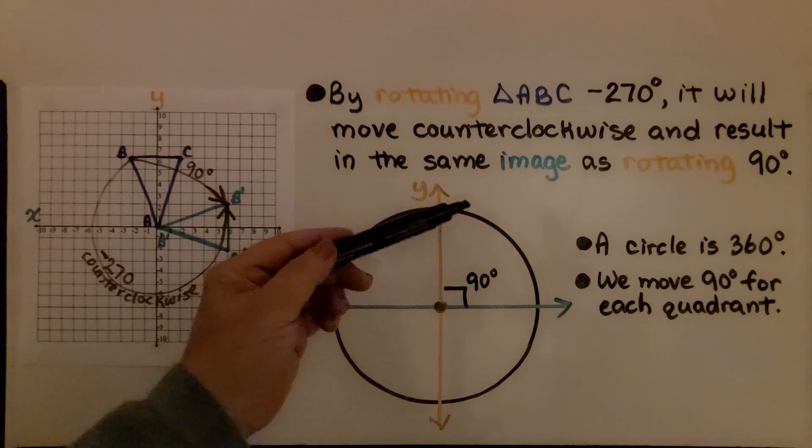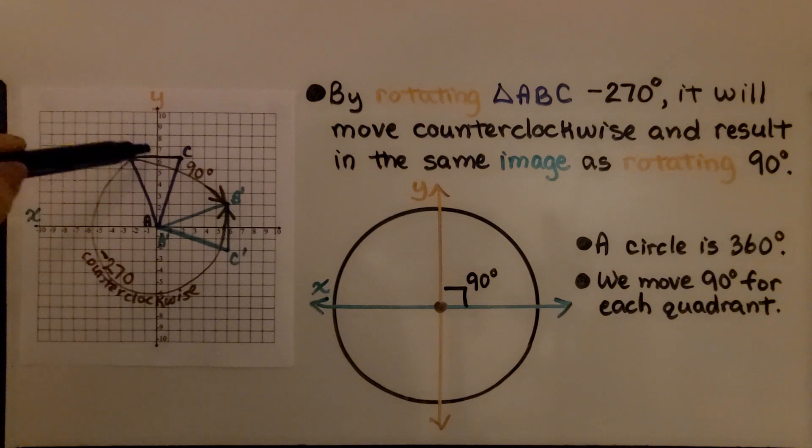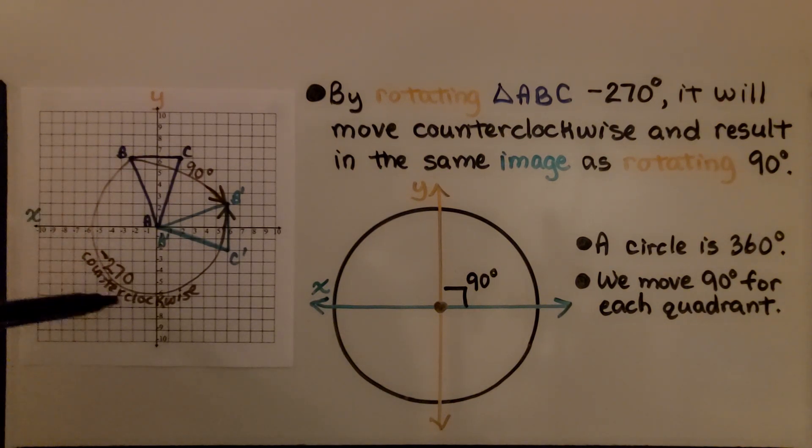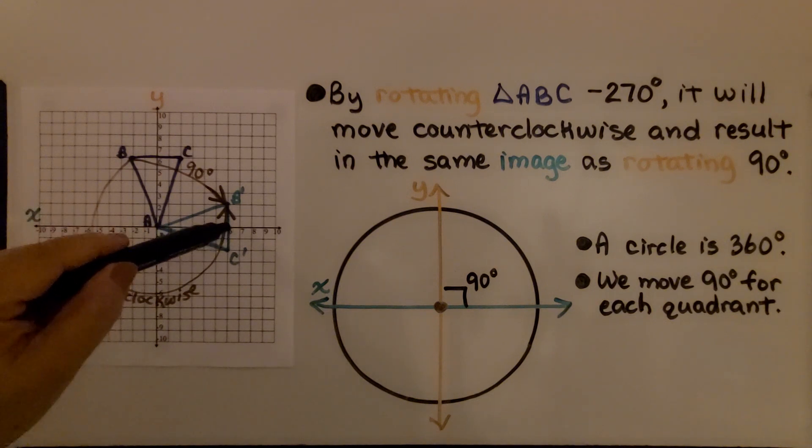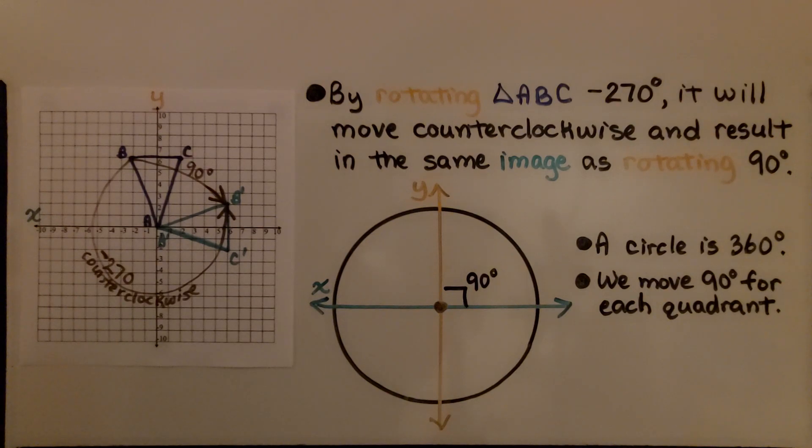Each quadrant we move through will be another 90 degrees. From this y-axis up here, we would go 90, then 180, then 270, and because we're going counterclockwise, that would be negative 270 degrees.